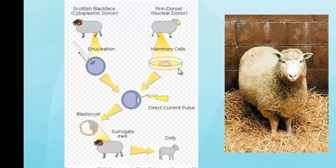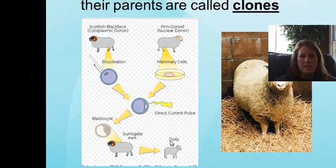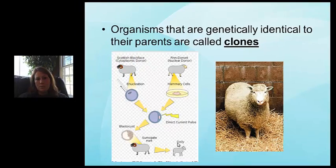To create Dolly, scientists used a process called enucleation — simply removing the nucleus from a donor cell. They took mammary cells from another sheep, combined them, and added an electrical pulse. That began the process of cleavage, which creates a blastocyst. Those cells then start developing into tissues that eventually lead to a complete organism. The key thing to know is: what are clones?